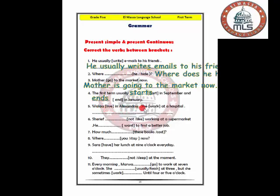Walaa lives in Alexandria. She works at a hospital. We talk about a fact so we use present simple. Walaa lives in Alexandria, she works at a hospital. Number six: Sheree not like, not means we use the negative form, working at a supermarket. It's a fact and present simple.